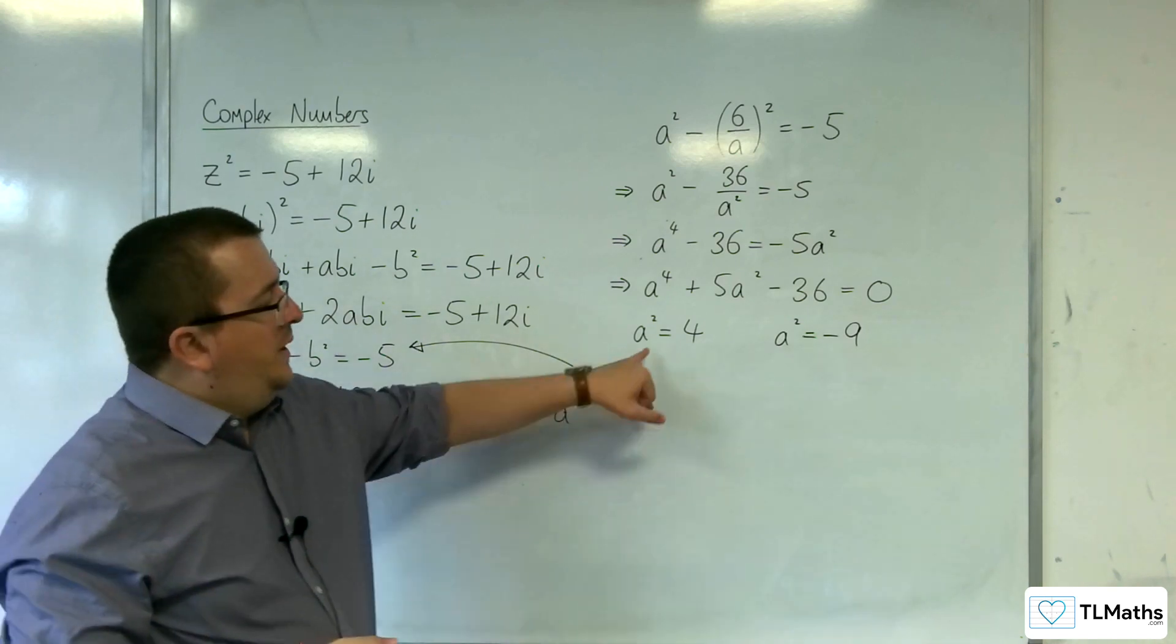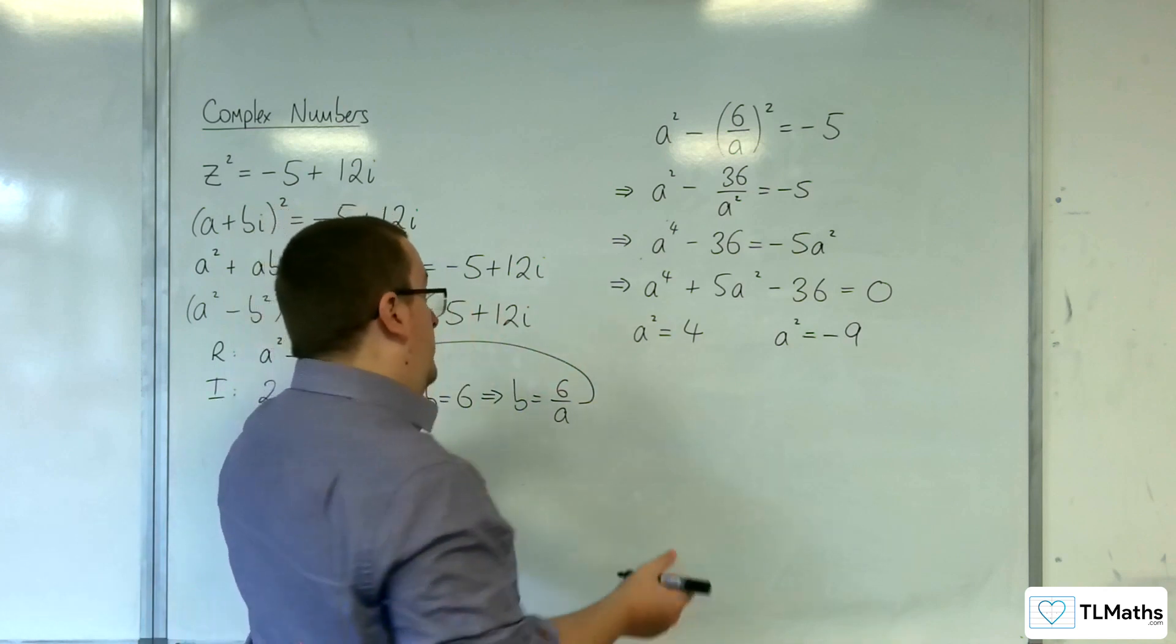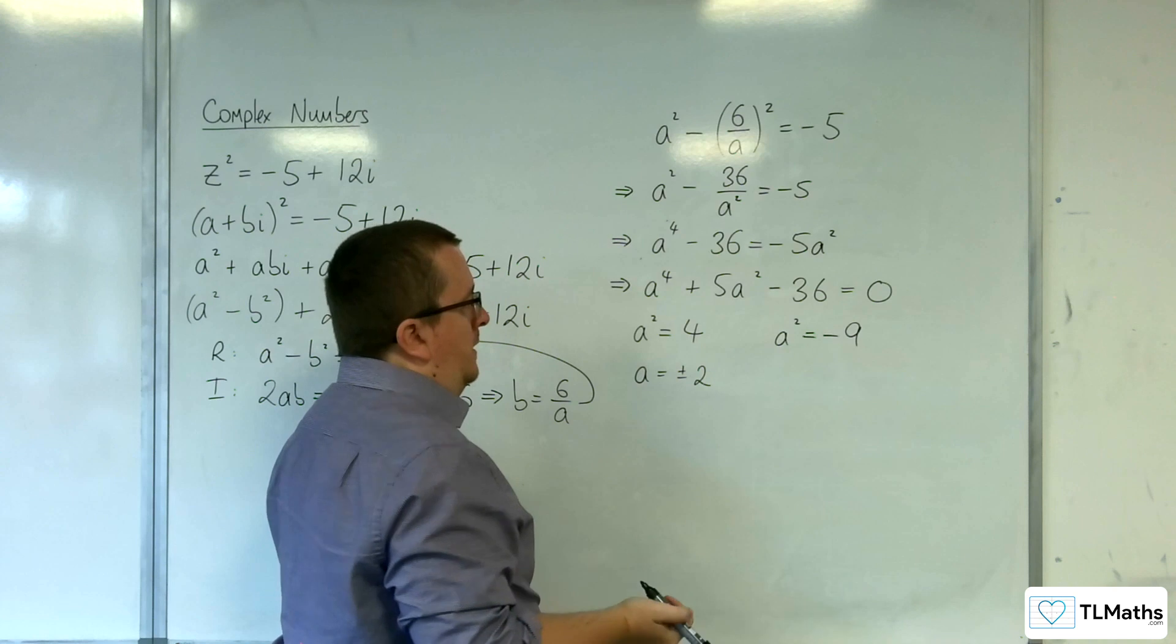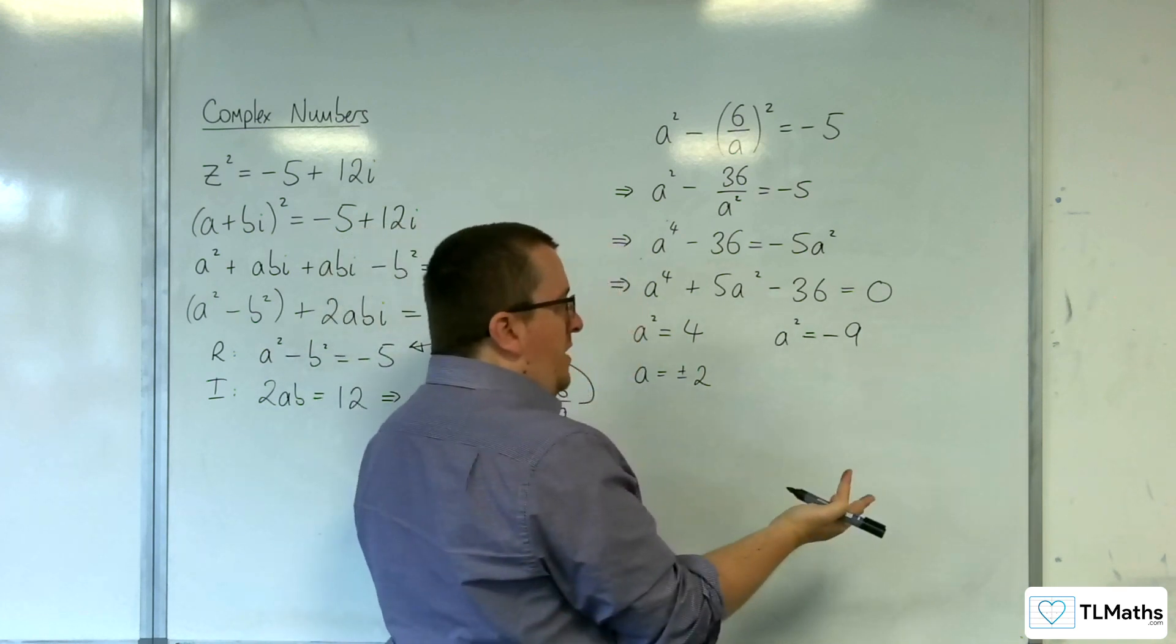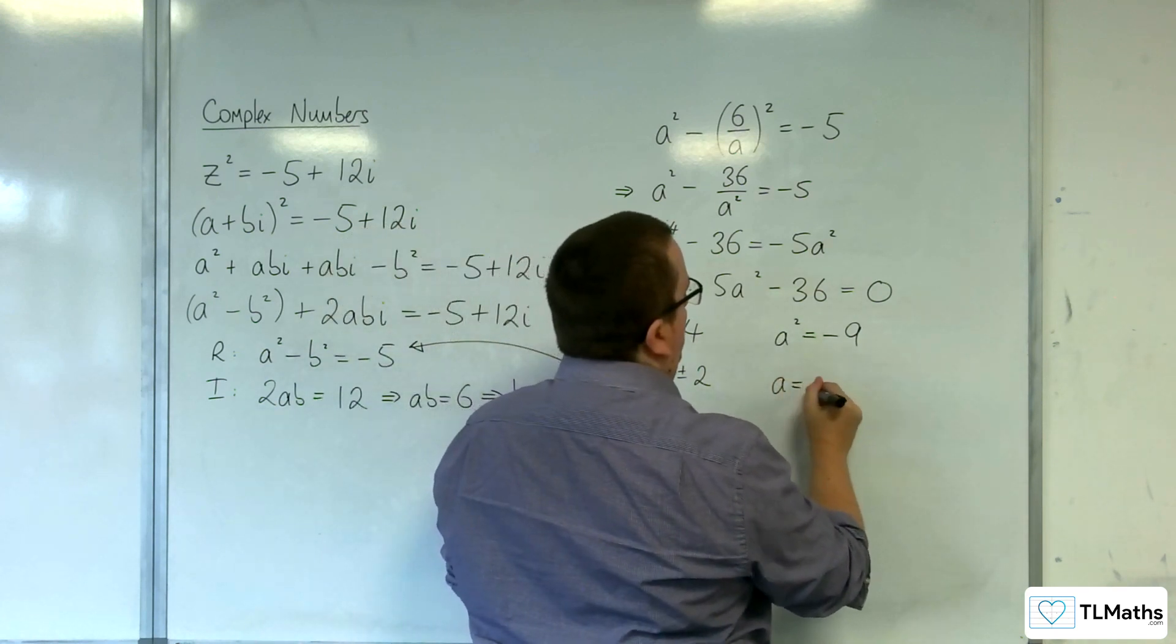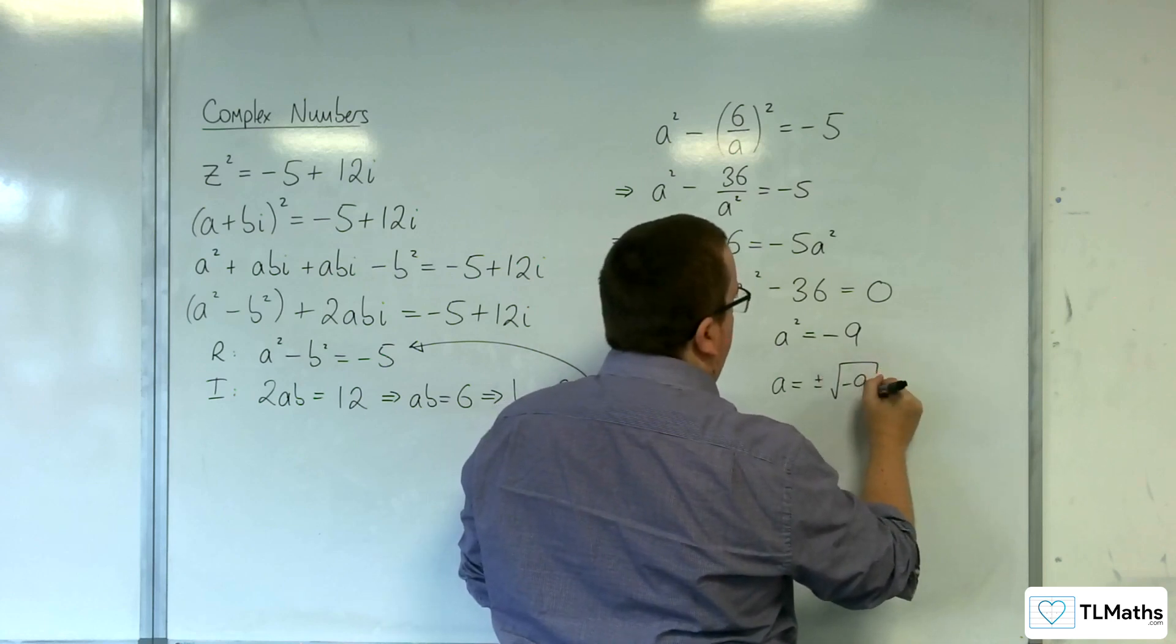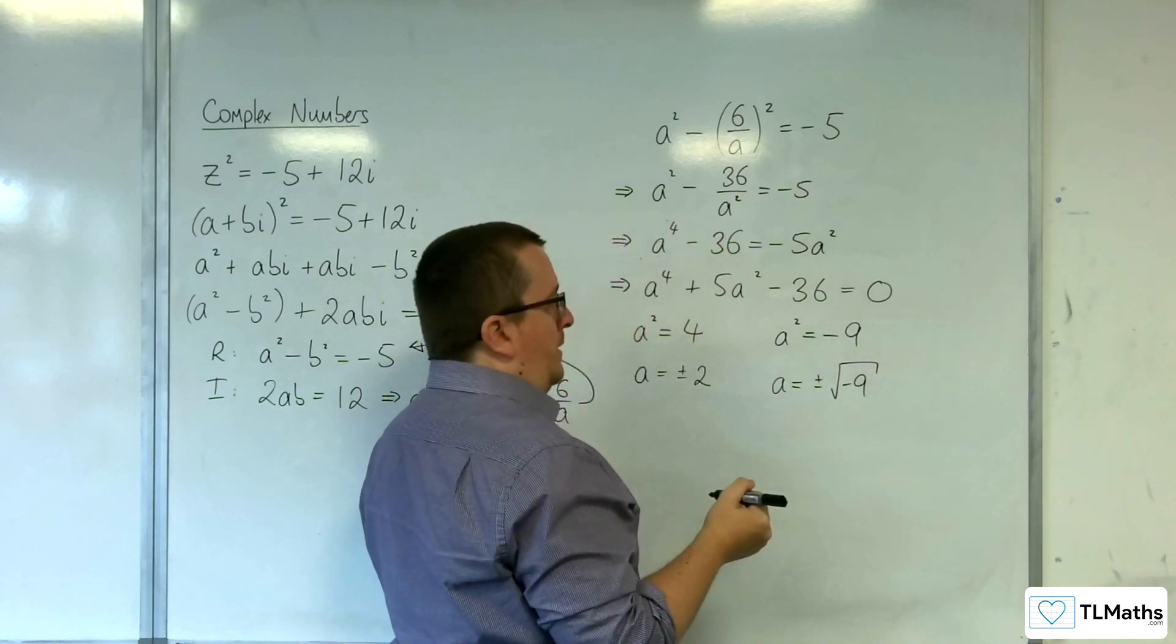Now, if a² is equal to 4, then a must be equal to ±2. If a² is equal to -9, then a must be equal to the square root, plus or minus, the square root of -9.